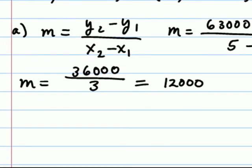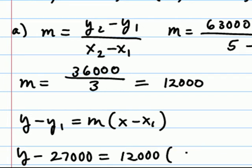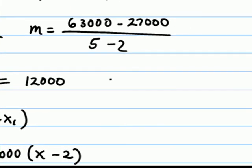To do so, we could pick either one of the two ordered pairs that we started with. I'll choose the first one. We'll use y minus y sub 1 equals m times x minus x sub 1. Plugging in the appropriate numbers, we could say y minus 27,000 equals 12,000 times x minus 2.